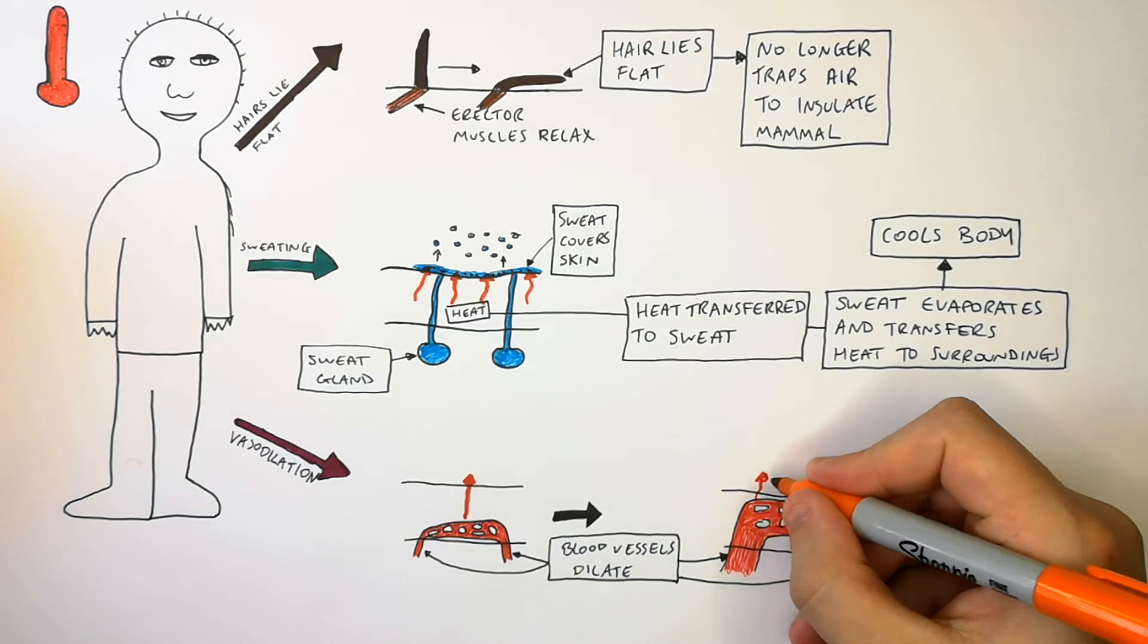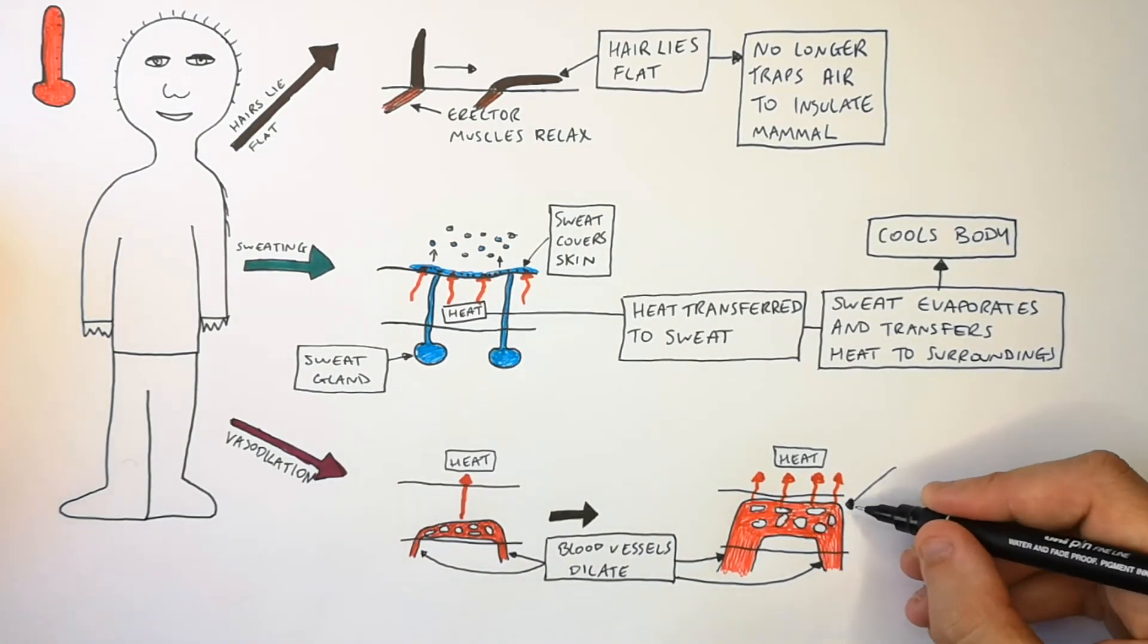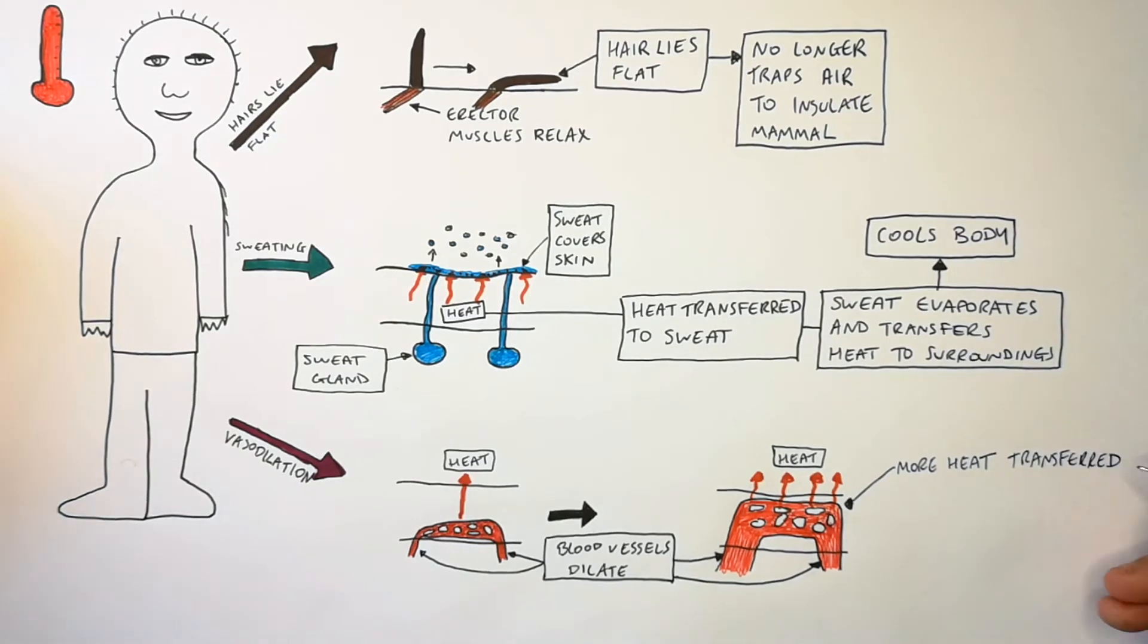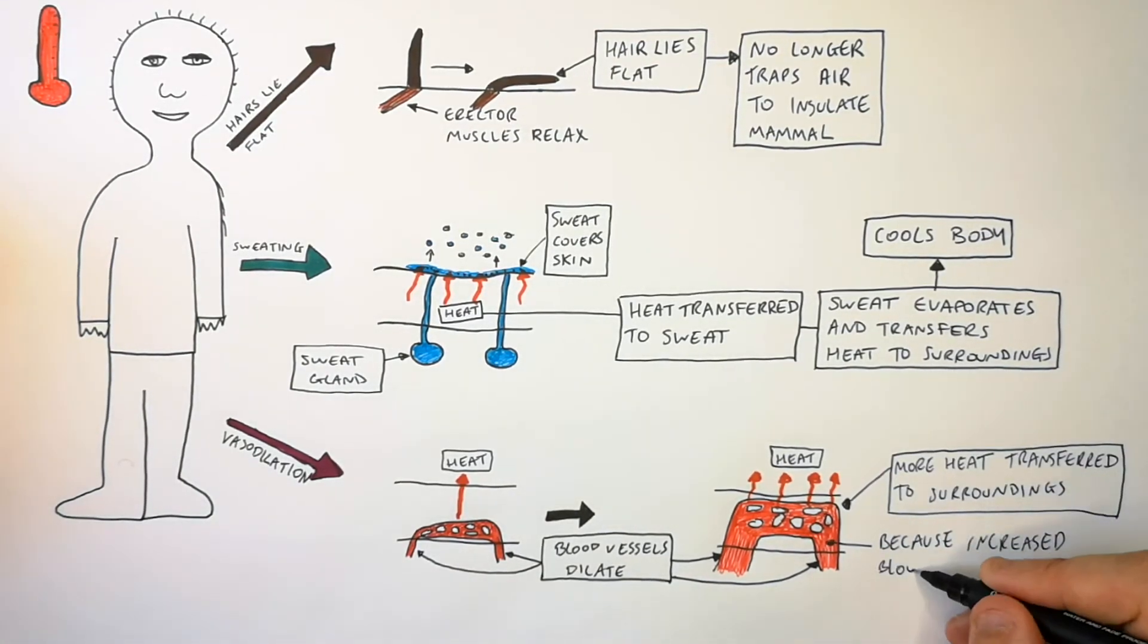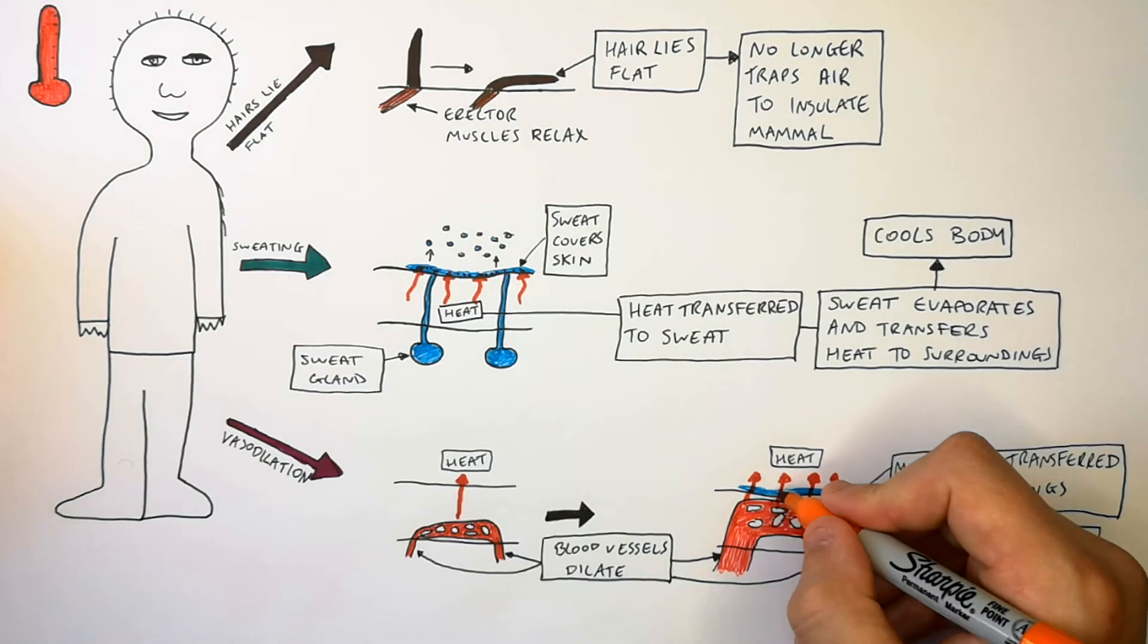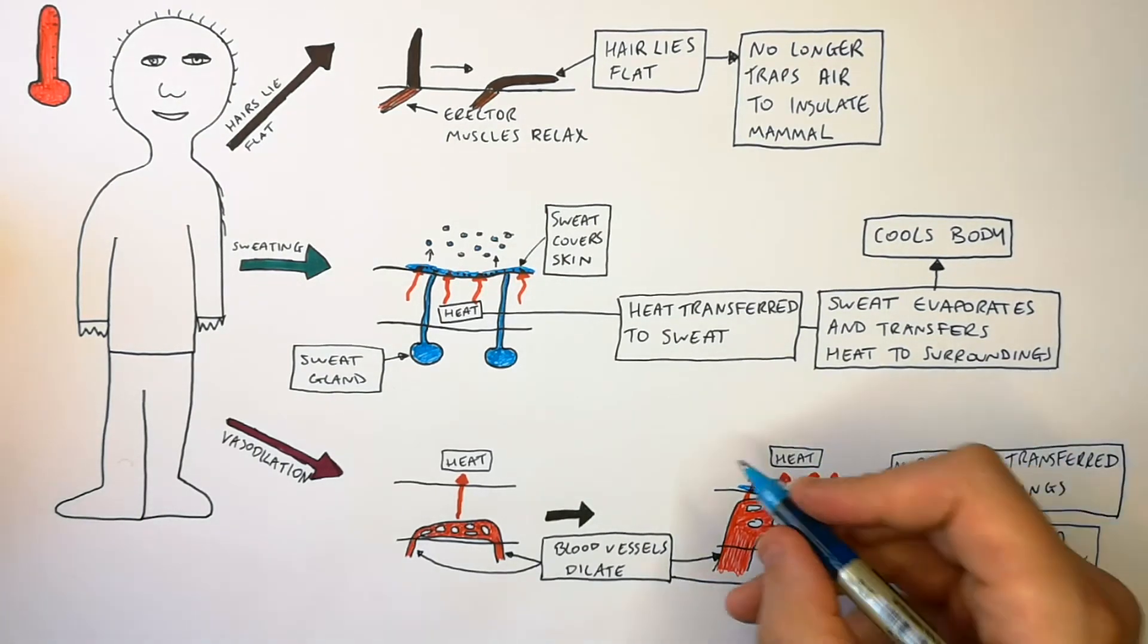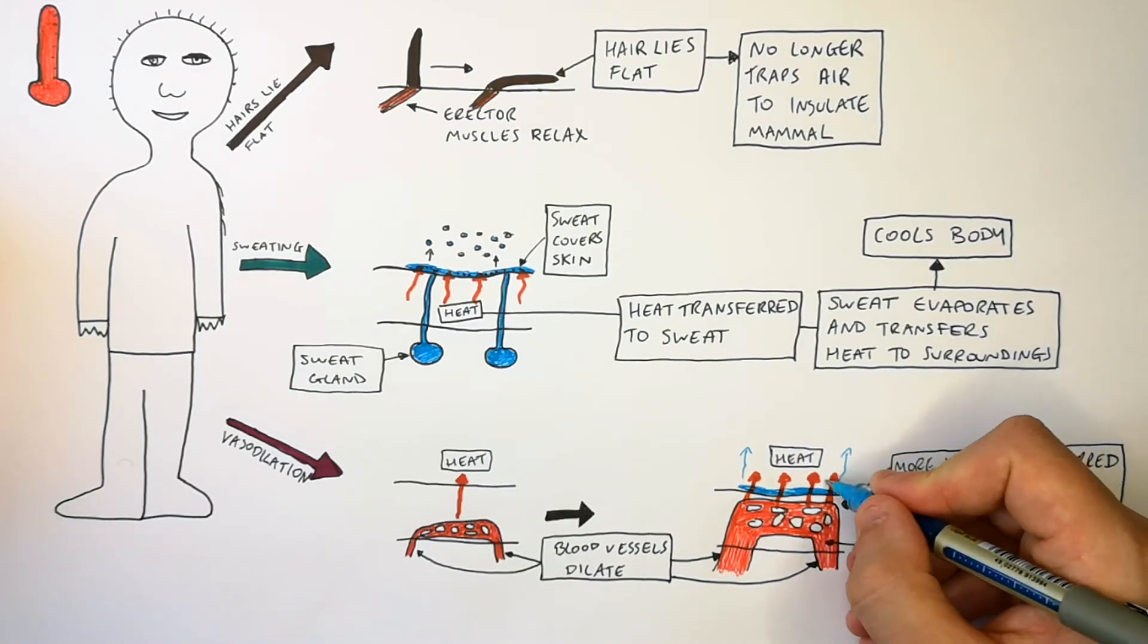This increases the amount of heat that can be transferred to the surroundings from our body. So more heat is transferred to the surroundings around us. This is because there is an increased blood flow to the skin. So when there's an increased blood flow to the skin that's going to increase the heat transfer into the sweat.